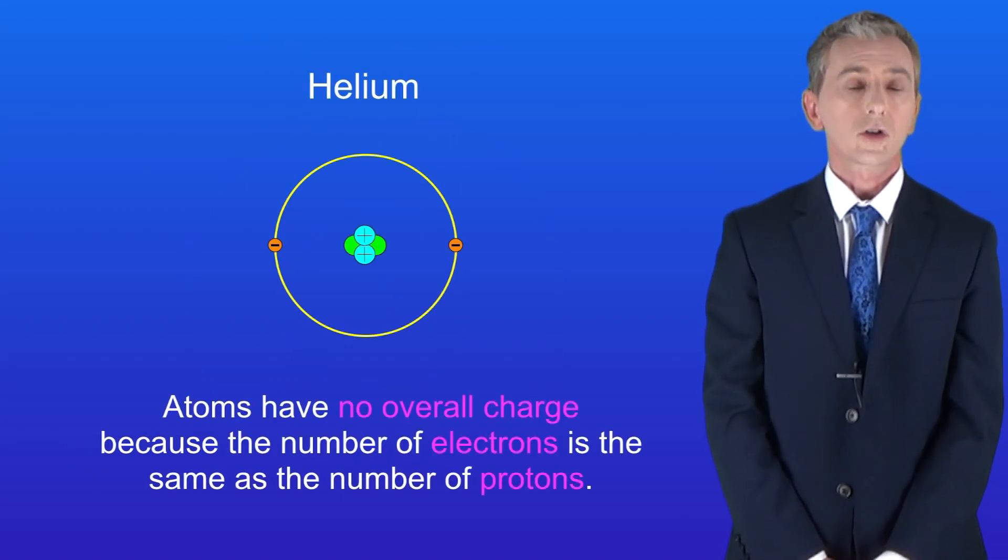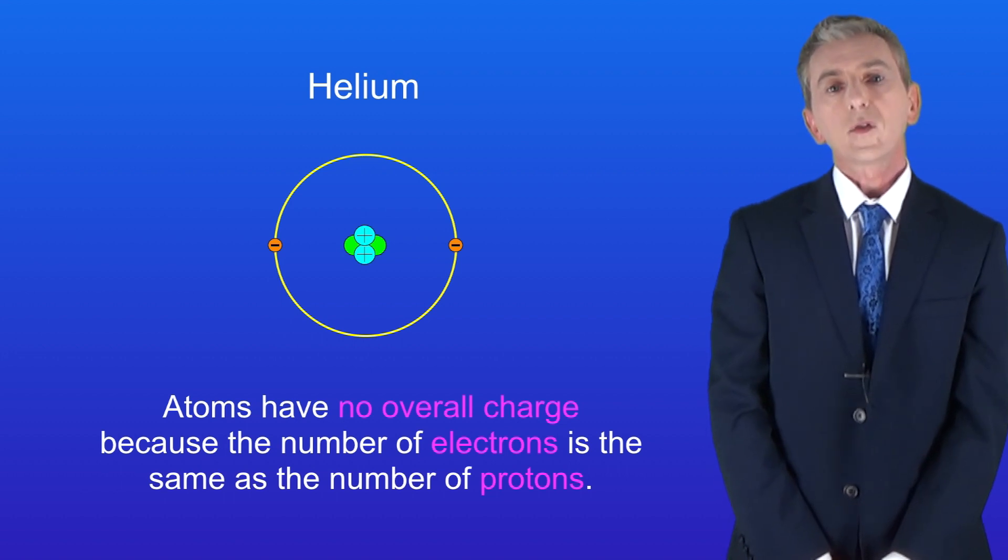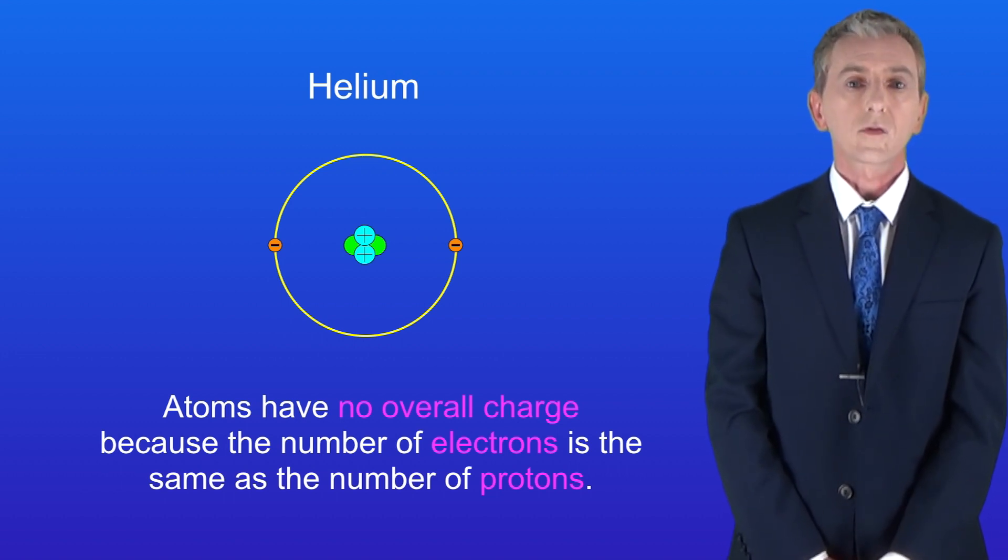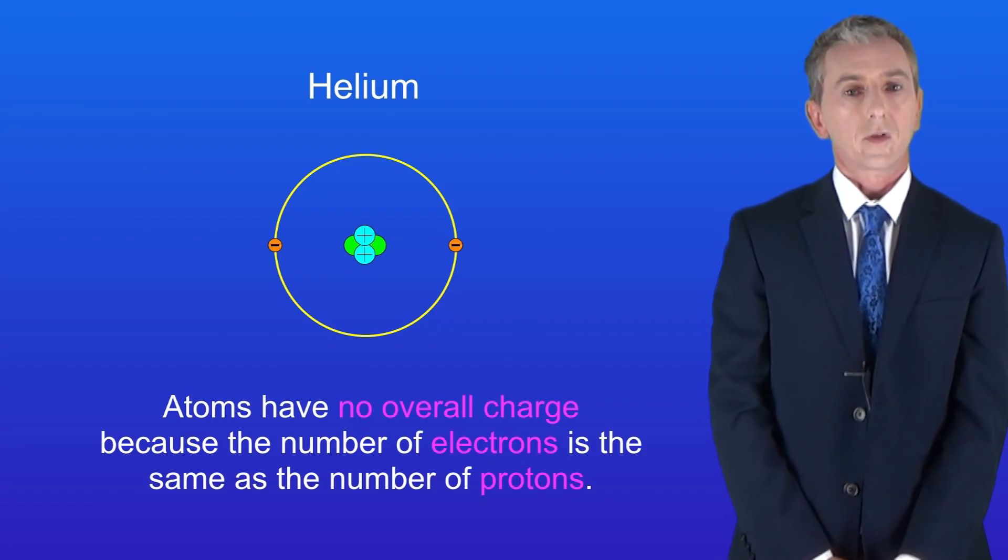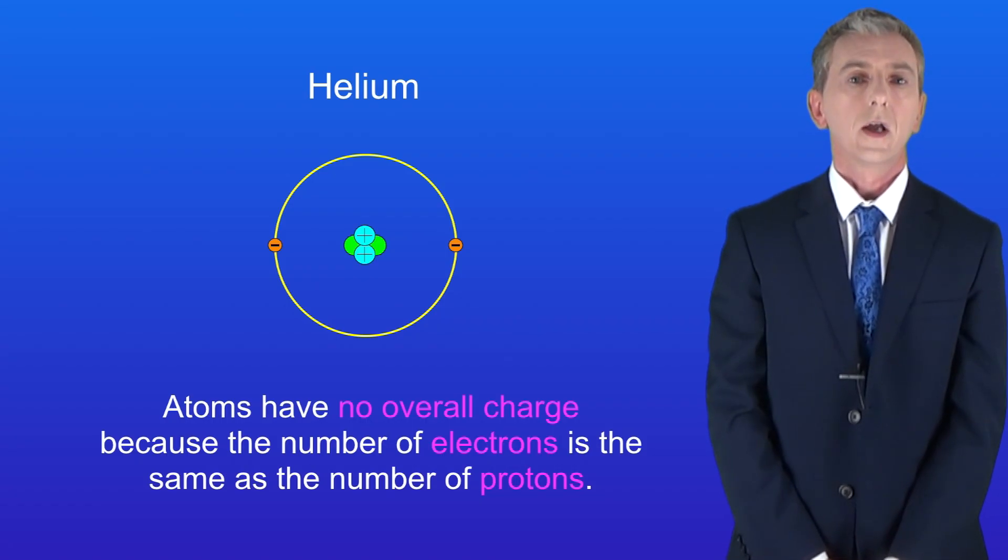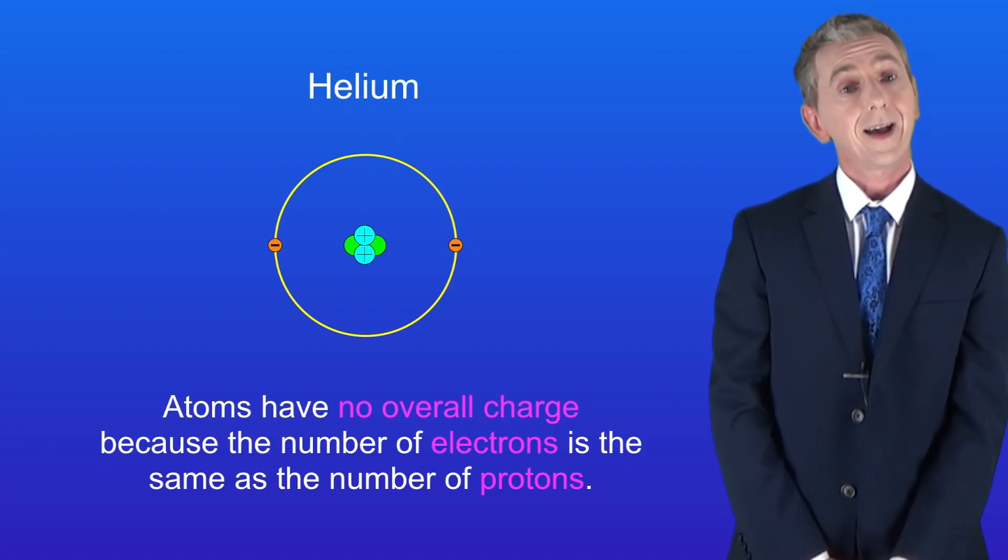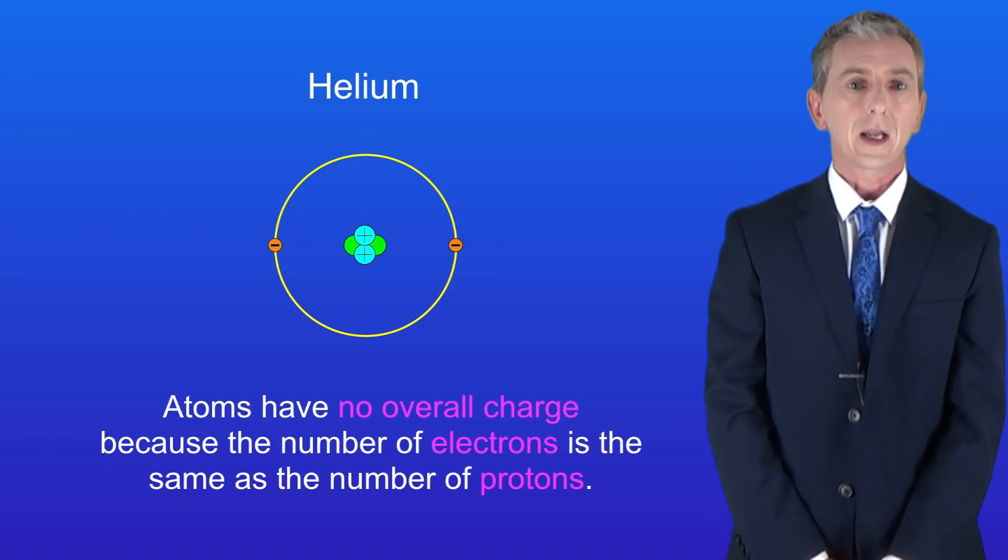I'm showing you here the structure of the element helium and this brings us to one key fact about atoms. Atoms have got no overall charge. That's because the number of electrons is the same as the number of protons. This means that the positive charges on the protons are cancelled by the negative charges on the electrons.